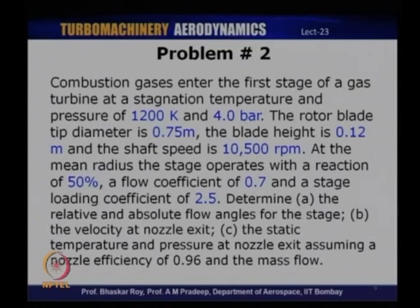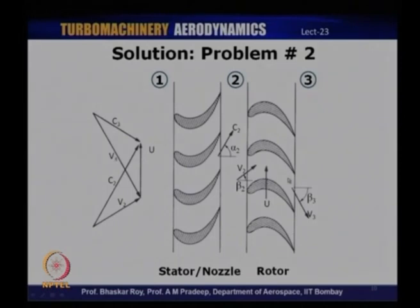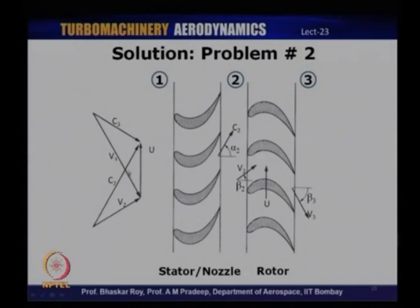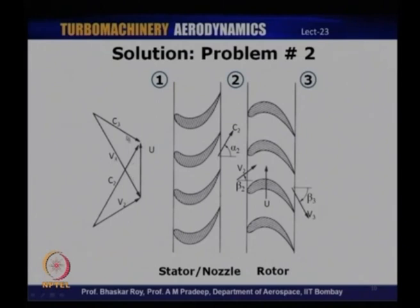For a 50% reaction stage, the velocity triangles are symmetrical or mirror images — the angles satisfy α2 = β3 and β2 = α3, and for constant axial velocity, C2 = V3 and V2 = C3. We are given the tip diameter, blade height, rotational speed, flow coefficient, loading coefficient, and degree of reaction.